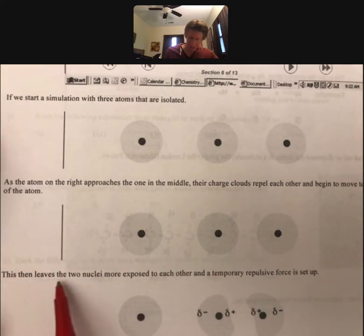This then leaves the two nuclei more exposed to each other, and a temporary repulsive force is set up. The center atom then gets repelled by the right atom and moves to the left. The charge cloud from the center atom starts to influence the cloud on the left atom.